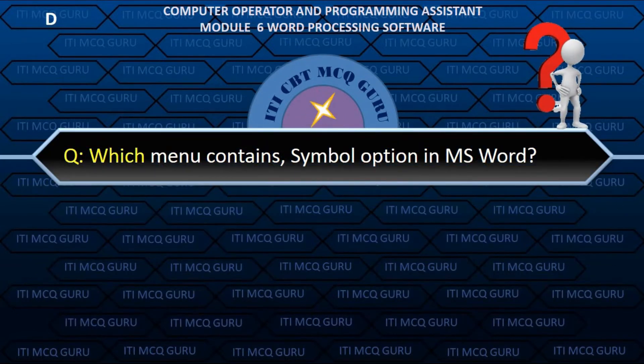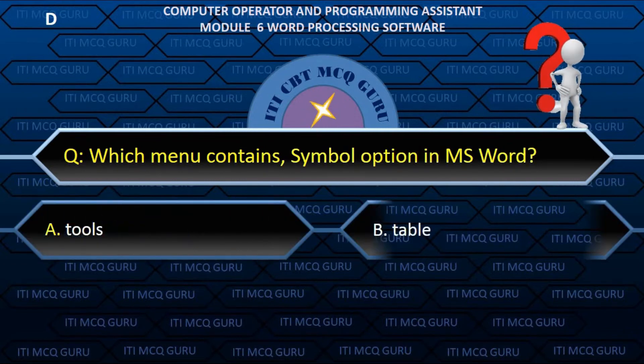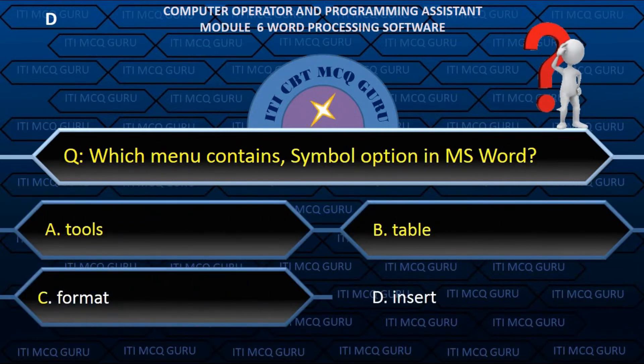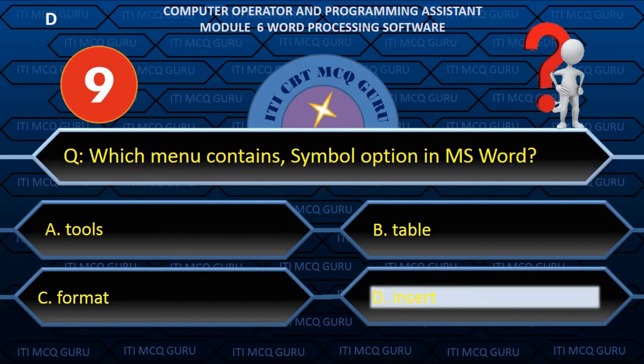Which menu contains the symbol option in MS Word? B. Insert.